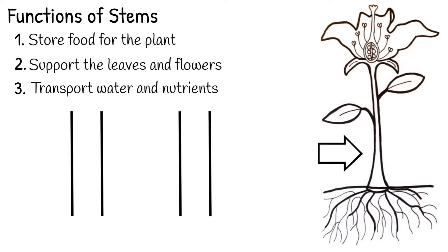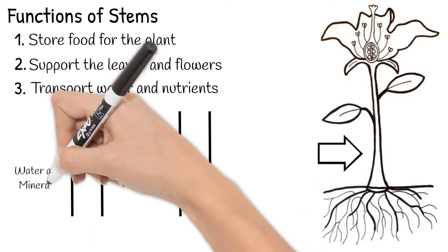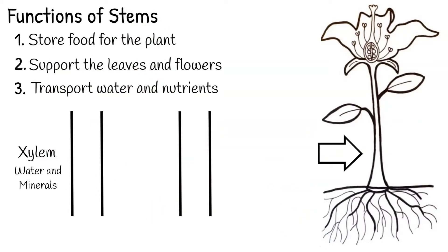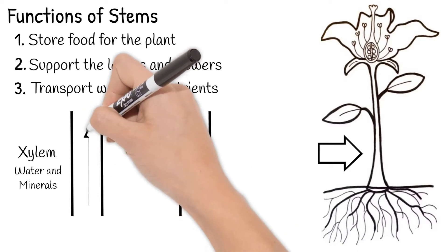The tubes that transport water and minerals are called the xylem. Once water enters the roots through osmosis, it goes into the xylem. The xylem has one-way travel. It only goes from the roots up to the leaves.